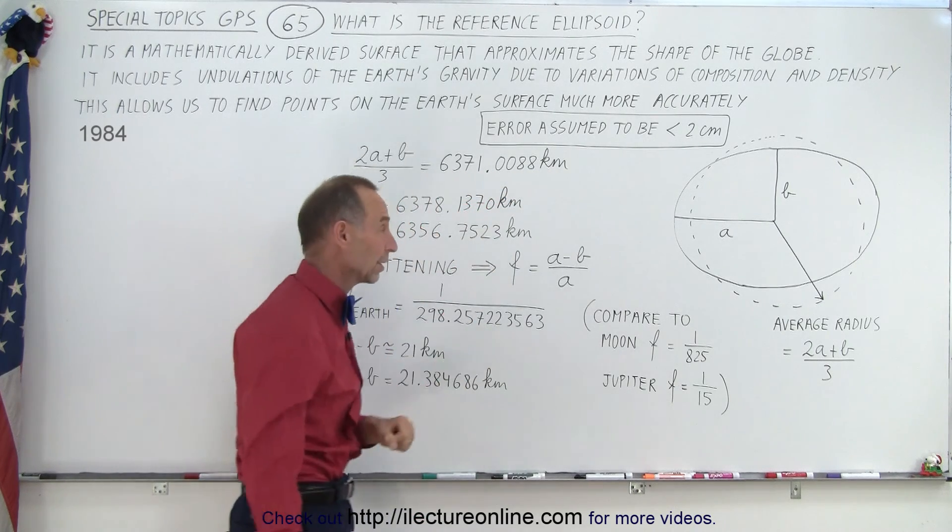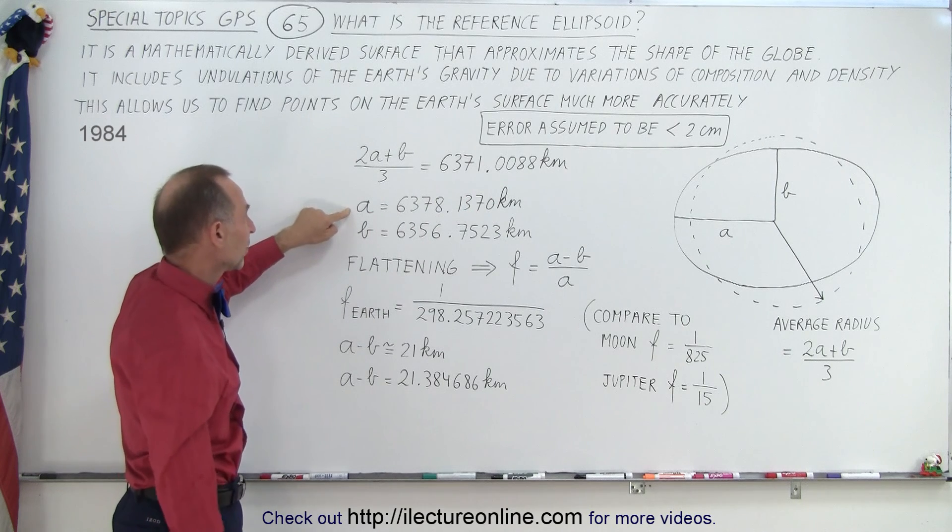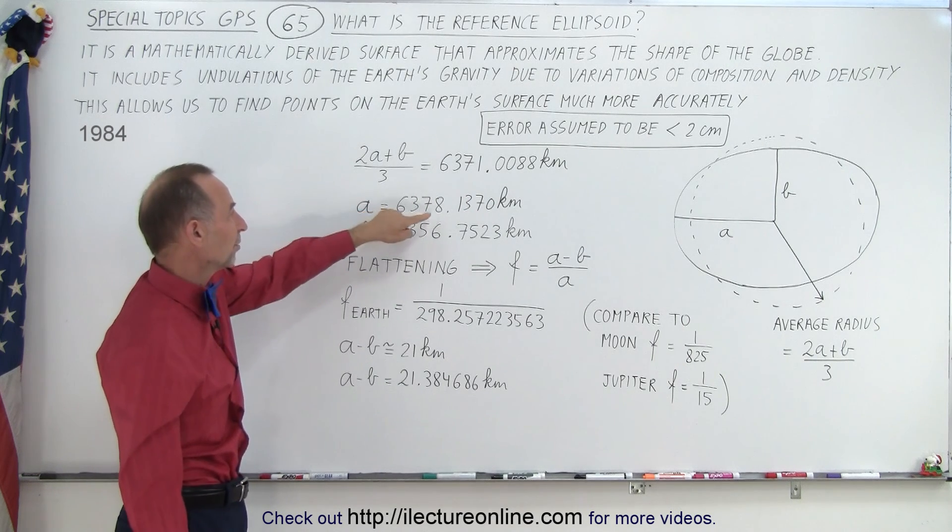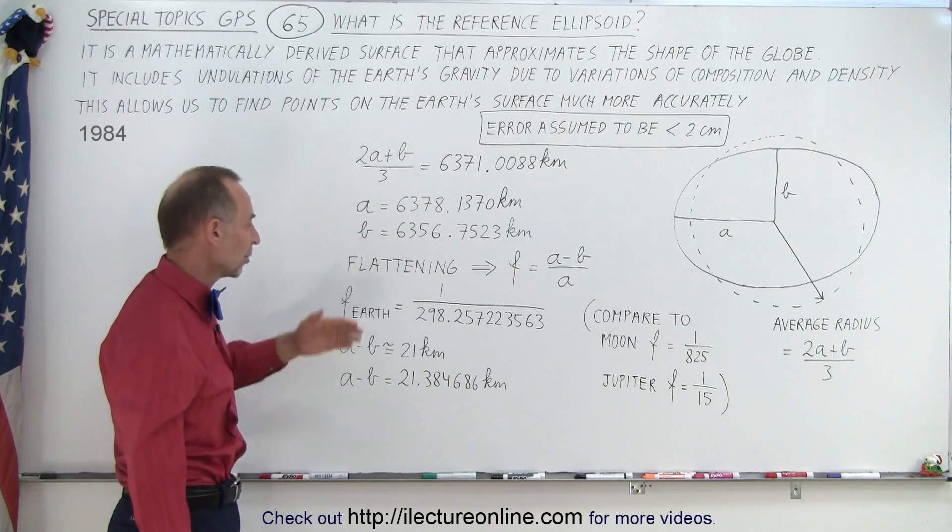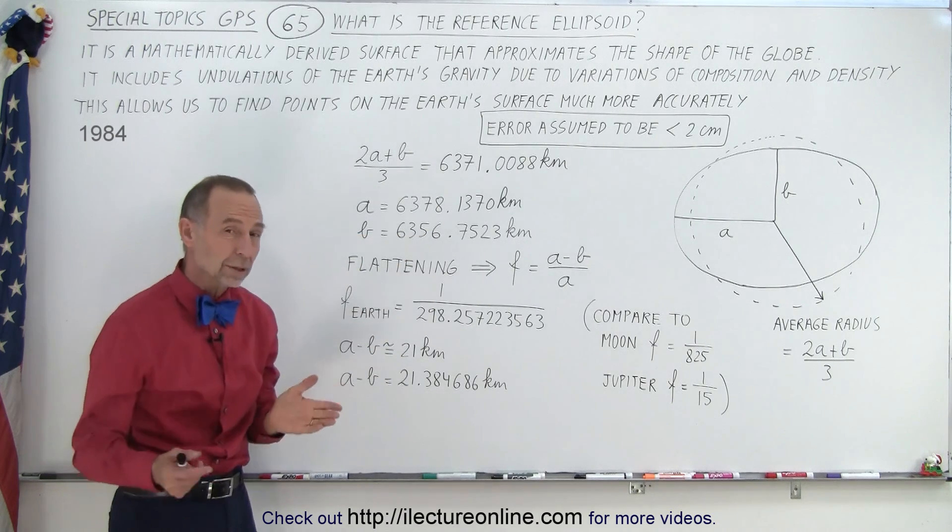Of course, we can calculate it much more accurately than that. So here's the semi-major axis at 6,378 kilometers and the semi-minor axis at 6,356 kilometers with a difference of about 21 kilometers.